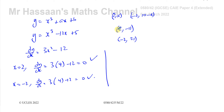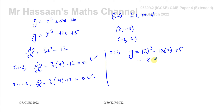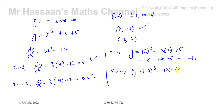Also verifying that these points satisfy the curve equation: when x equals 2, y should be negative 11. We get 2 cubed minus 12 times 2 plus 5 equals 8 minus 24 plus 5 equals negative 11 — correct. When x equals negative 2, y should be 21. We get negative 2 cubed minus 12 times negative 2 plus 5 equals negative 8 plus 24 plus 5 equals 21 — also correct.